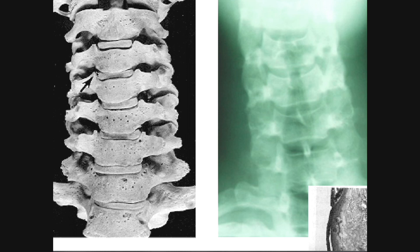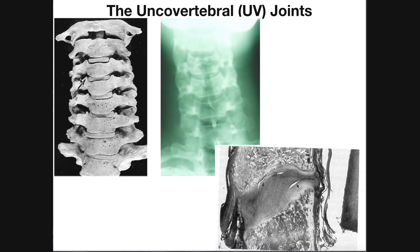A couple of other things about the uncovertebral joint: it is not a synovial joint, does not have a true synovial joint capsule, and does not have synovial fluid. It is bathed in a kind of interstitial fluid, but it is not a synovial joint. The uncovertebral joint, together with the zygapophyseal joints, does add some stability to the cervical spine; however, the zygapophyseal joints contribute far more to overall stability.